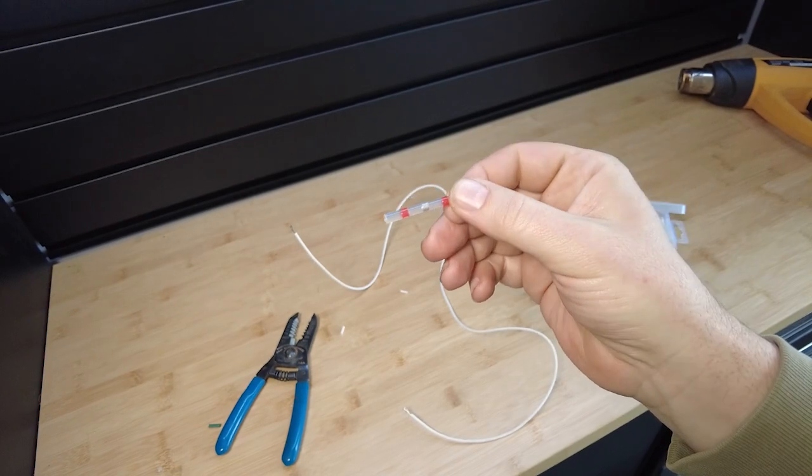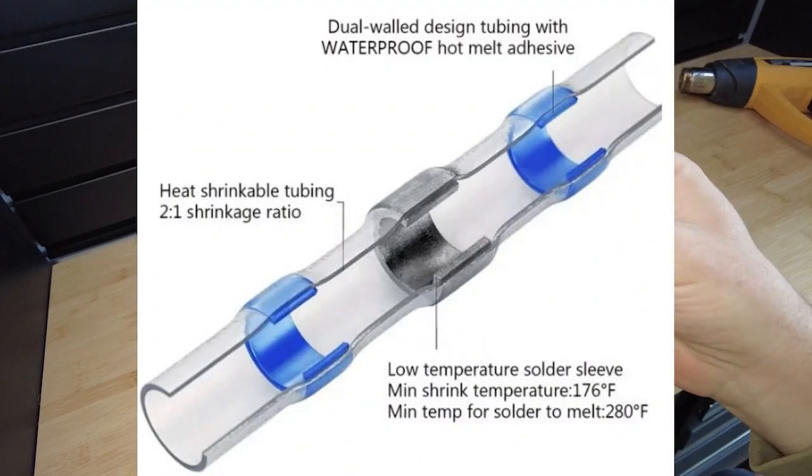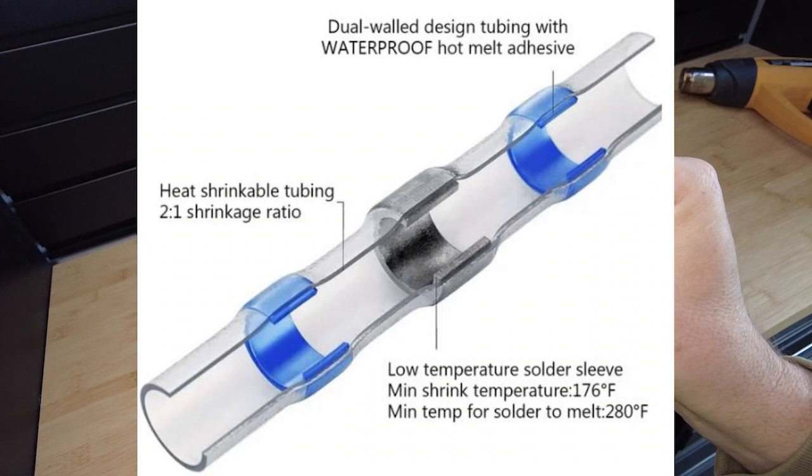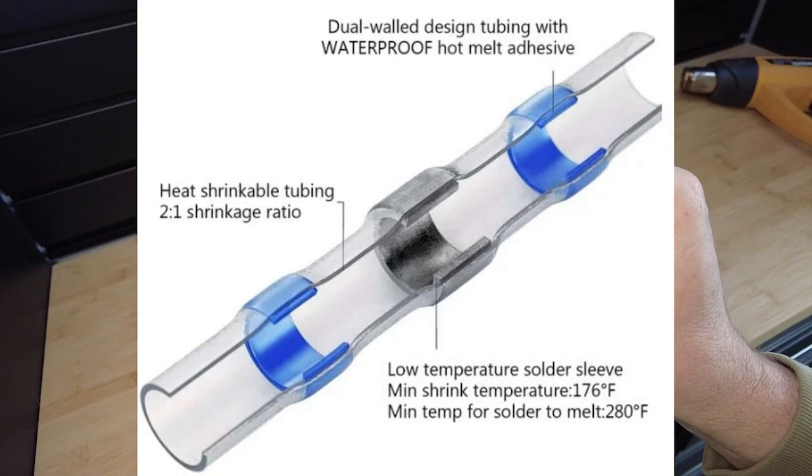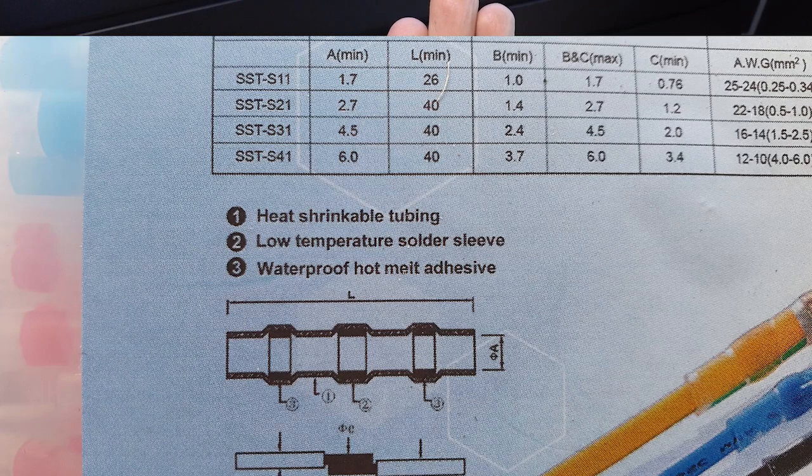So they've got a heat shrink jacket, and then you can see a little band of solder in the middle. That solder is supposed to melt and penetrate the wires within that area there and make the connection without having to crimp it.